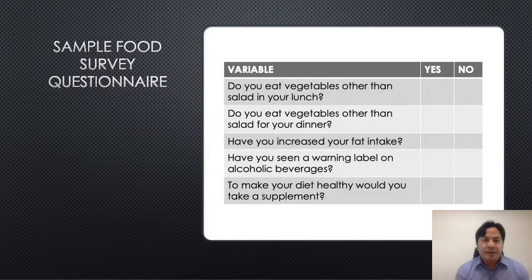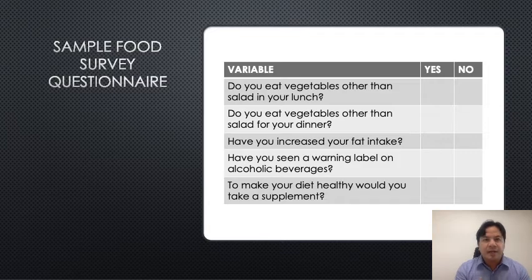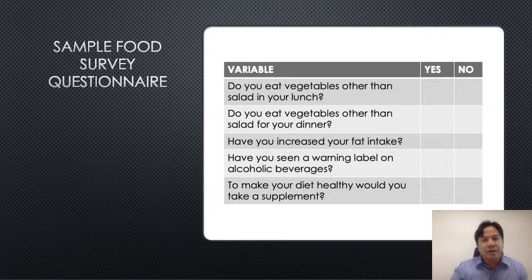Depending on the objectives of your study, you can use either the binary scale or a 5-7 point scale. In this example of a food server questionnaire, they decided to use a binary scale. However, if you look at question number three — 'how have you increased your fat intake' — you could actually ask how much they have increased or decreased their fat intake: highly increased, moderately increased, neutral, the same, and so on.